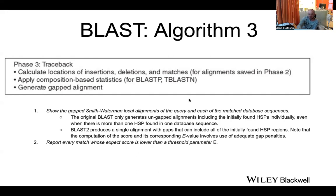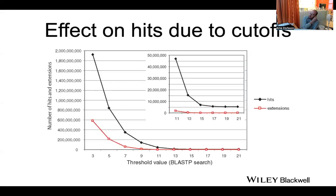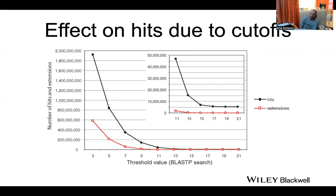Every match that passes the Smith-Waterman step is then reported with an E-value. Looking at the numbers: at a threshold of 7-8, you have hundreds of millions of initial hits; at 12-13 it drops dramatically. Extensions are even fewer with lower cutoffs, so you can dramatically reduce the database search space with stricter thresholds — though too high a threshold risks missing true hits. This makes the search essentially linear in time instead of quadratic.